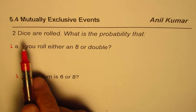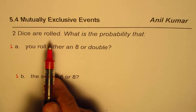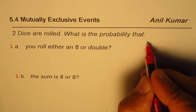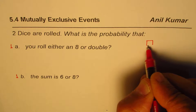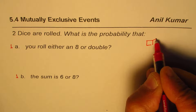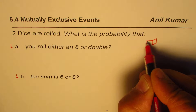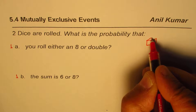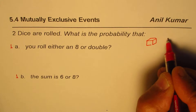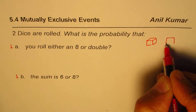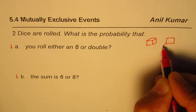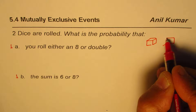We are rolling two dice — one big die and one small die. I'm giving you time to pause the video and answer the questions, and then I'll provide you with a solution.